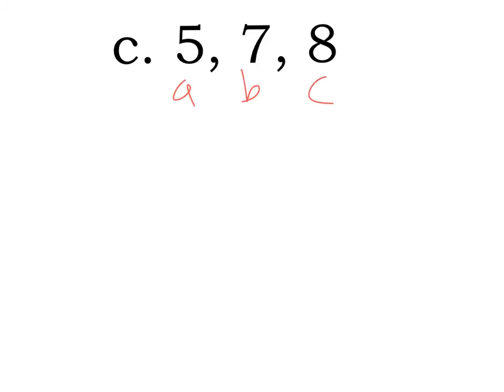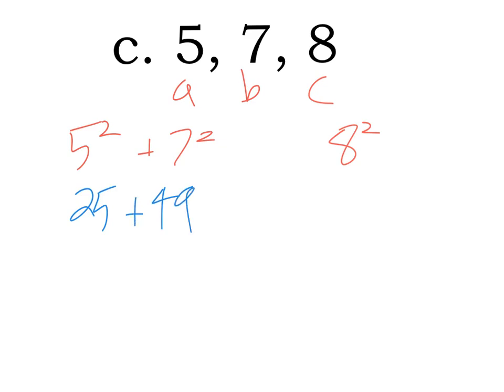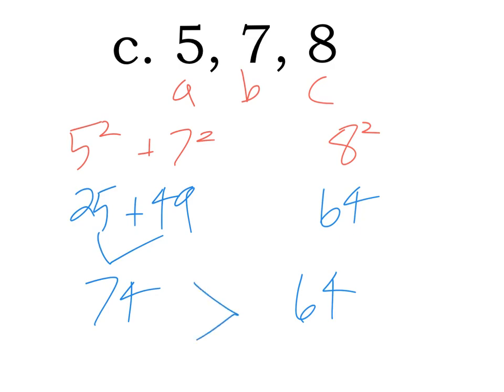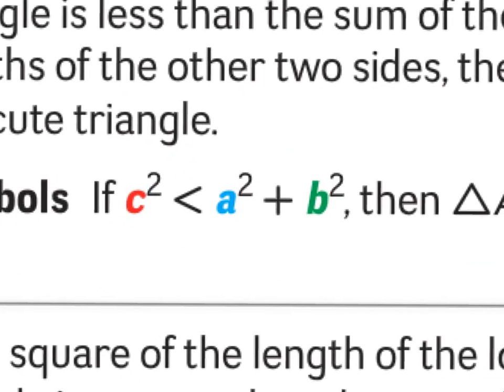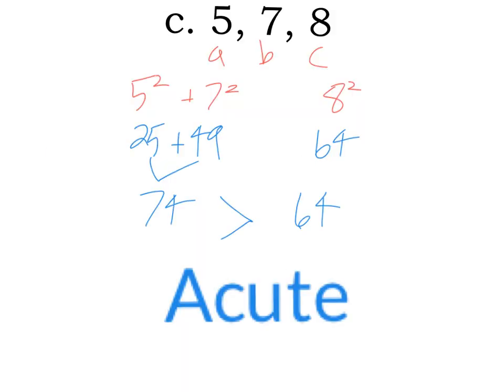For the last example, the sides are 5, 7, and 8. The largest is 8, which is c. 5 squared is 25, 7 squared is 49, and 8 squared is 64. 25 plus 49 is 74, which is greater than 64. Since a squared plus b squared is greater than c squared, this is an acute triangle. That wraps up these notes — thank you for watching, and hit that like and subscribe button. Goodbye.